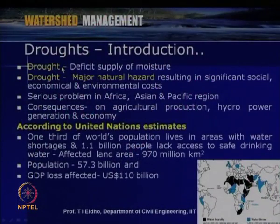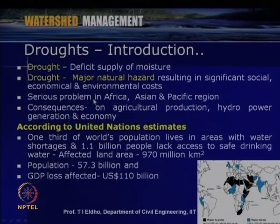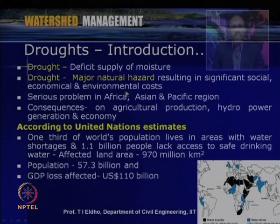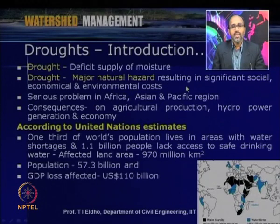Short-term and long-term droughts are both serious, but long-term drought is very detrimental — the total settlement and people will be very much affected. When we look into droughts on a watershed scale, drought is said to occur when there is a deficit supply of moisture. It is a major natural hazard and results in significant social, economical, and environmental costs.